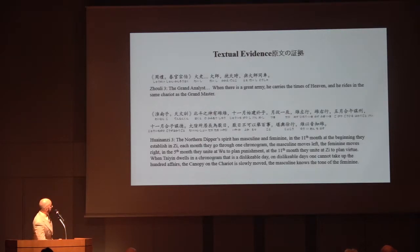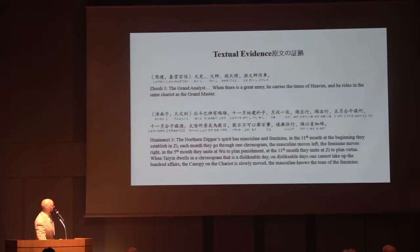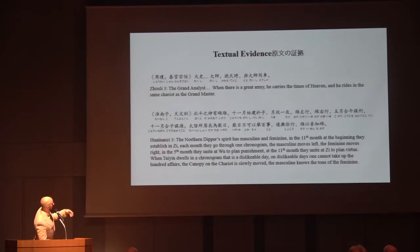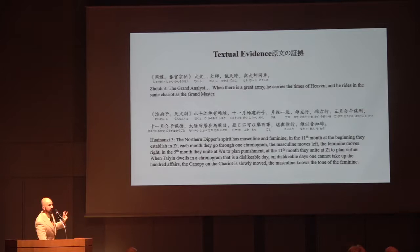From the Huainanzi: 'The Northern Dipper spirit has masculine and feminine. In the 11th month at the beginning, they establish yin zi, the rat. Each month they go through one earthly branch. The masculine moves left' — which is clockwise — 'and the feminine moves right.' At summer solstice they unite to plan punishment, as winter is coming. At winter solstice they unite to plan virtue and flourishing. Ta yin, sway yin, tai sway are interchangeable terms — tai sway being what most people know as the Grand Duke.